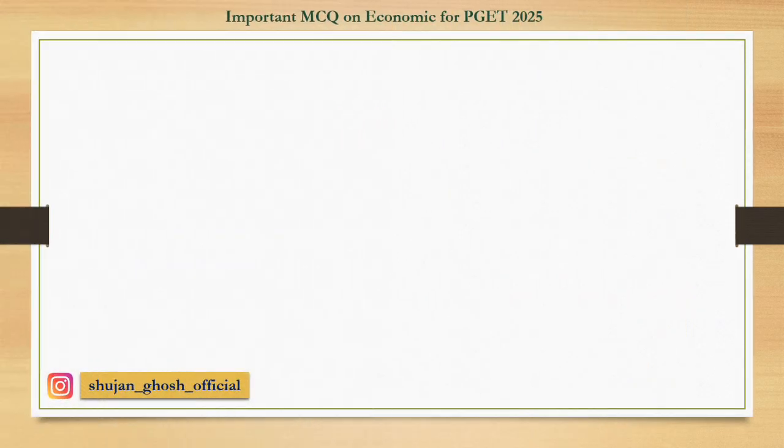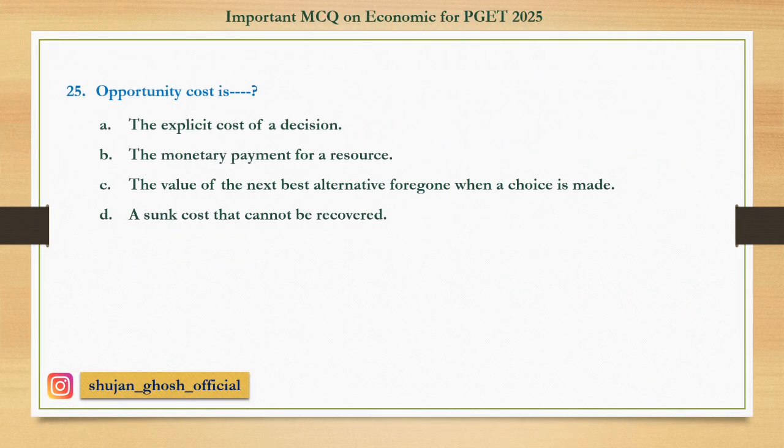Question number twenty-five: Opportunity cost is — option A: the explicit cost of a decision; B: the monetary payment for a resource; C: the value of the next best alternative forgone when a choice is made.